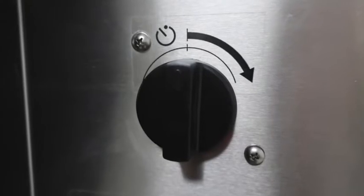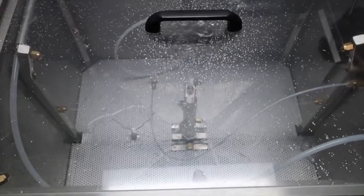A full timer cycle is 60 seconds. This is what the tank looks like during the wash cycle.